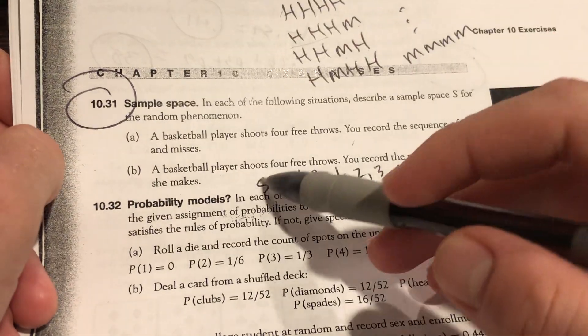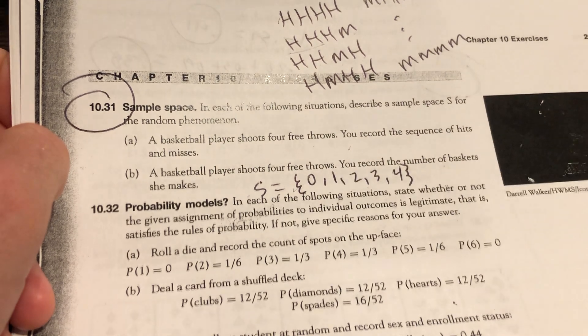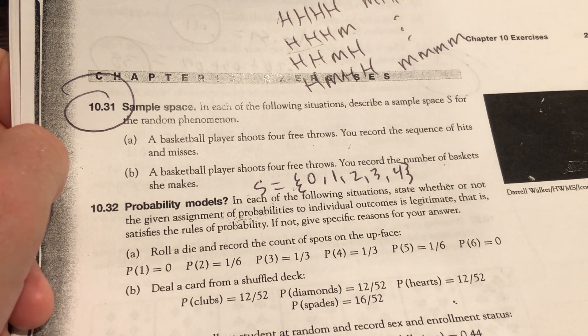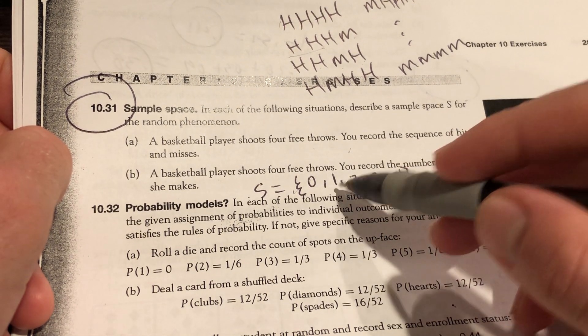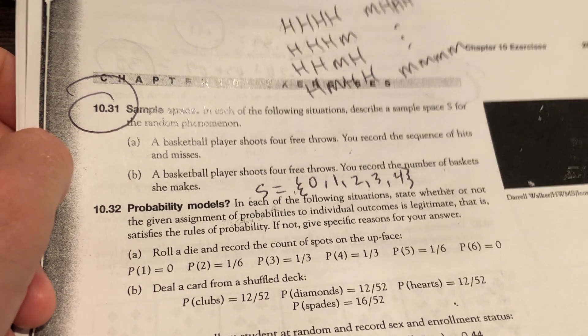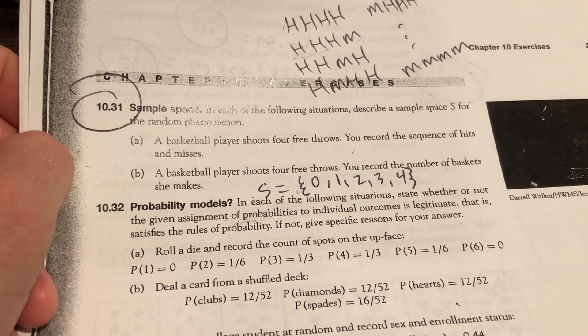Definitely write all of B, though. We write S for sample space, and this is set notation. How many baskets can they make? They either make zero, one, two, three, or four. They can't make 3.8. They can't make 0.2 baskets.